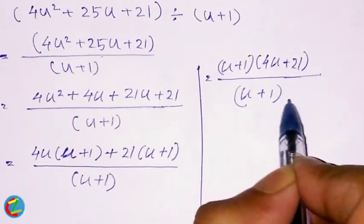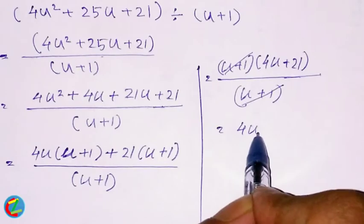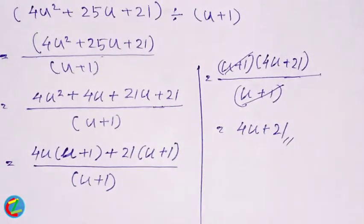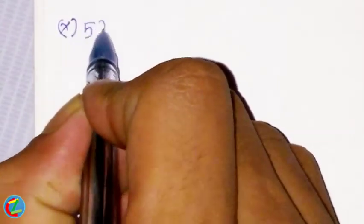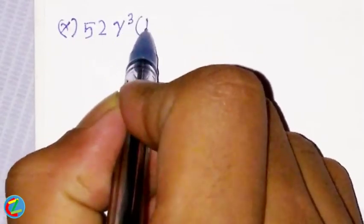U + 1 or U + 1. So ultimately we have 4u + 21. On the next thing we can do is make our minimum.